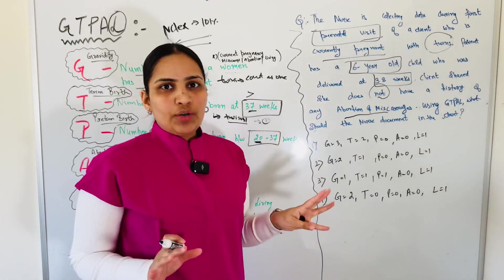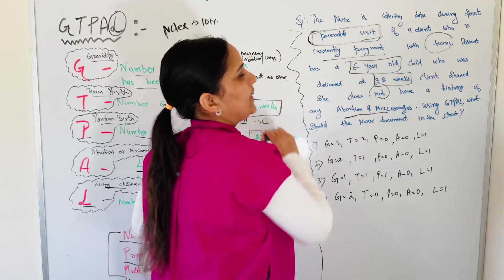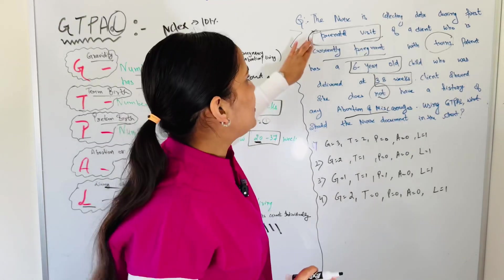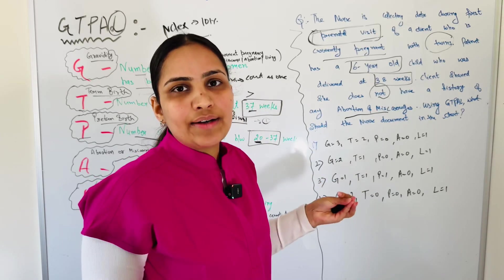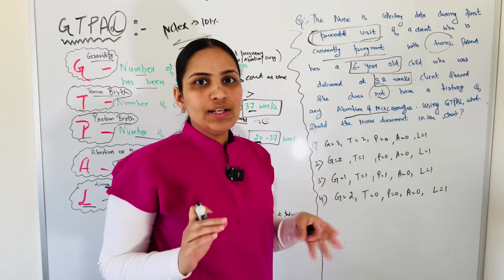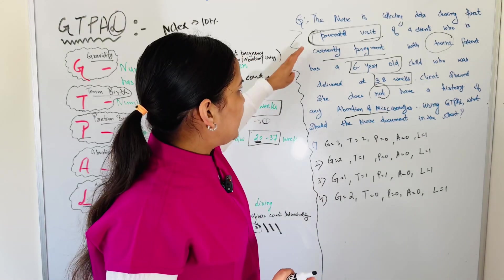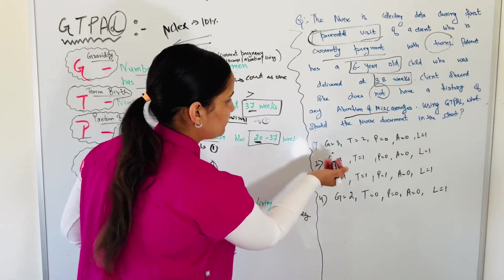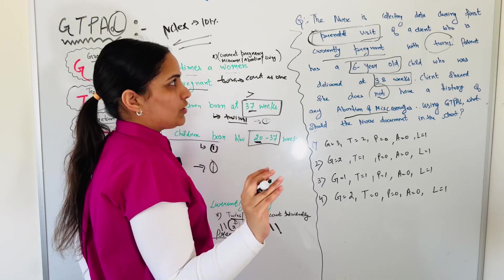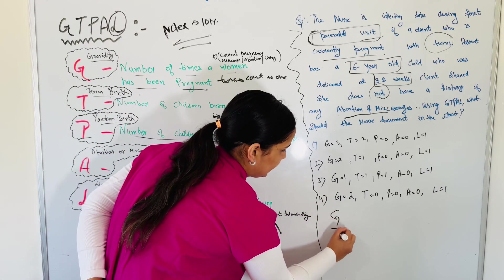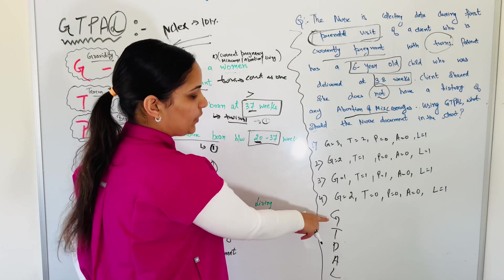Did you notice when I was reading the question, what I do? I highlighted. I highlighted the information we need. This is the same strategy you can use while practicing your questions. You have to highlight information. Distractors will be there in the question, you have to ignore those. This is what I did in my questions.